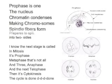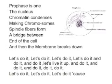The cycle is done. Prophase is one. The nucleus — chromatin condenses, making chromosomes. Spindle fibers form, a break between the end of the cell. And then the membrane breaks down.